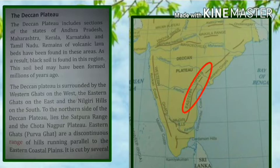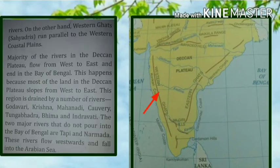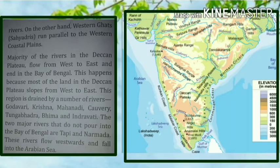The Eastern Ghats are a discontinuous range of hills that run parallel to the eastern coastal plains. 'Discontinuous' means they are not a continuous range. A 'range' is a chain of mountains cut by several rivers. On the other hand, the Western Ghats run parallel to the western coastal plain. The majority of rivers in the Deccan Plateau flow from west to east.